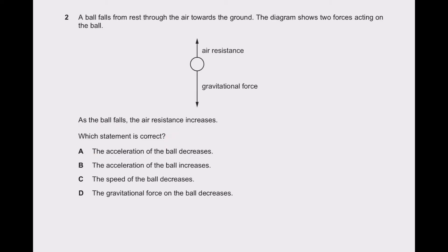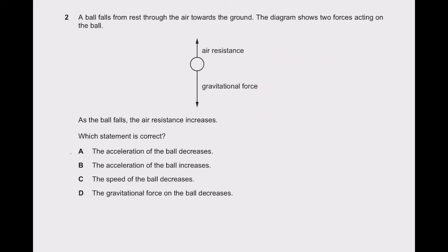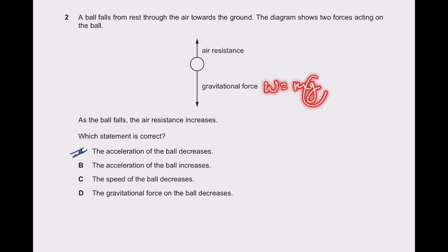The acceleration of the ball decreases. As the ball goes down, the opposite force — air resistance — also increases. So F_net will be gravitational force minus air resistance, and air resistance is increasing. So F_net will decrease, and F_net equals mass into acceleration. Mass is constant, so acceleration is decreasing. The right answer is A. Other options: acceleration increases — no; speed decreases — no, the velocity will increase with a decreasing rate; gravitational force decreases — no, it remains constant because W equals mg, and both m and g are constant.